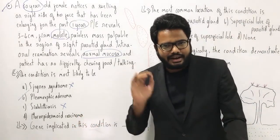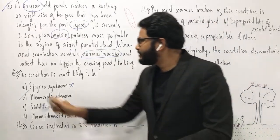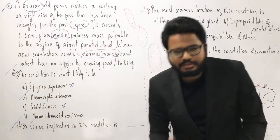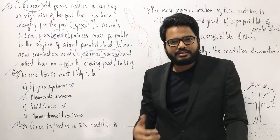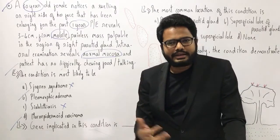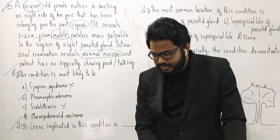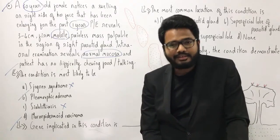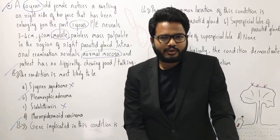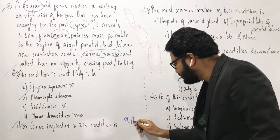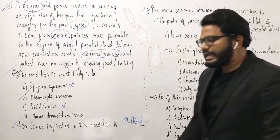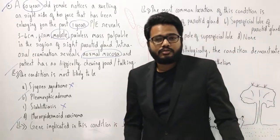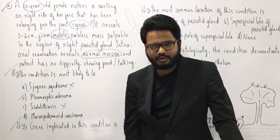Now let's move on to the next related question: what is the gene implicated in pleomorphic adenoma? This is purely memory-based, so I always ask you to make a note of such points — only through repeated revision and mnemonics can you master these. The pleomorphic adenoma gene is PLAG1, as you all rightly mentioned — fantastic. It has been mapped to chromosome 8Q12. Do make a note of that point.